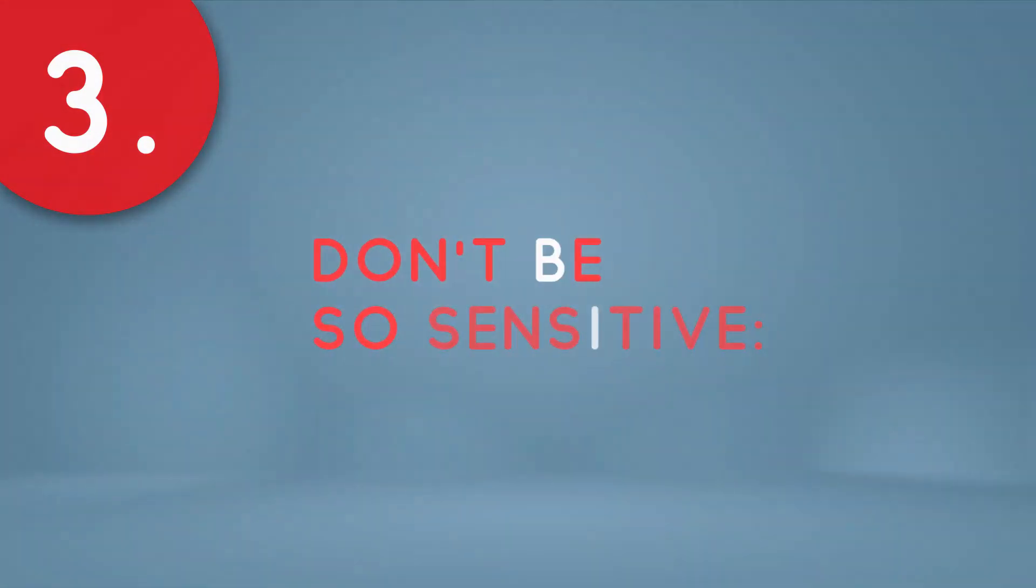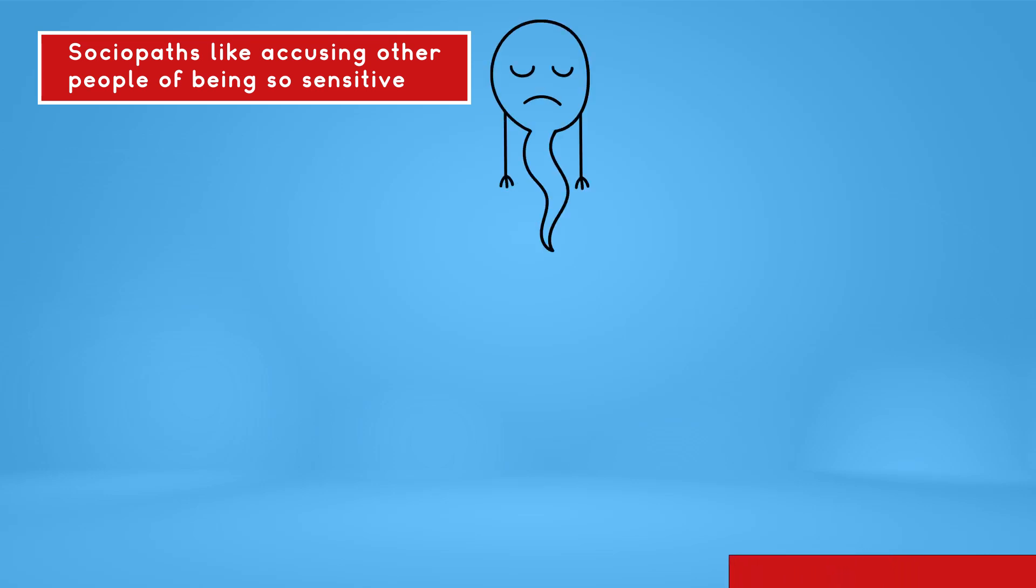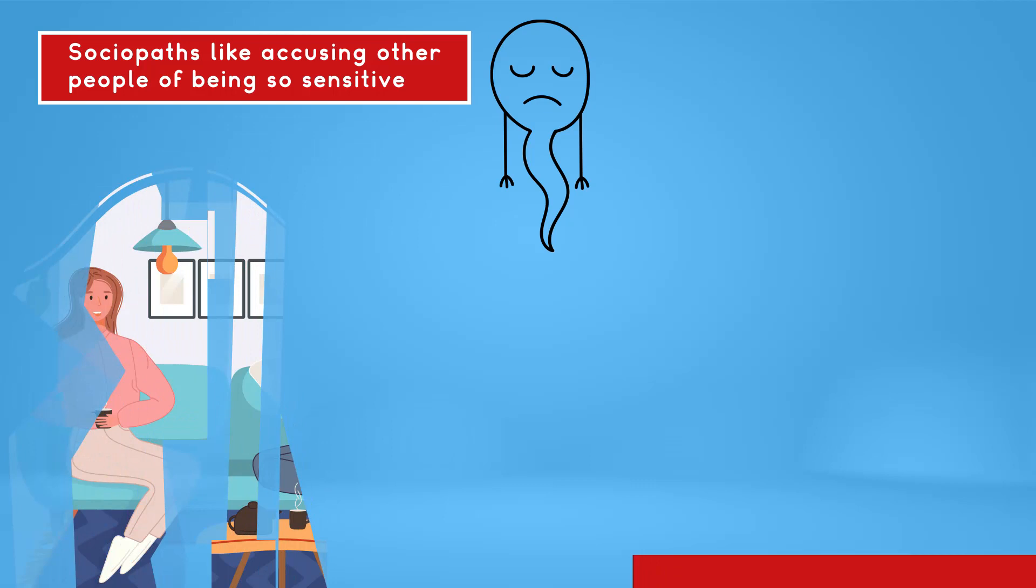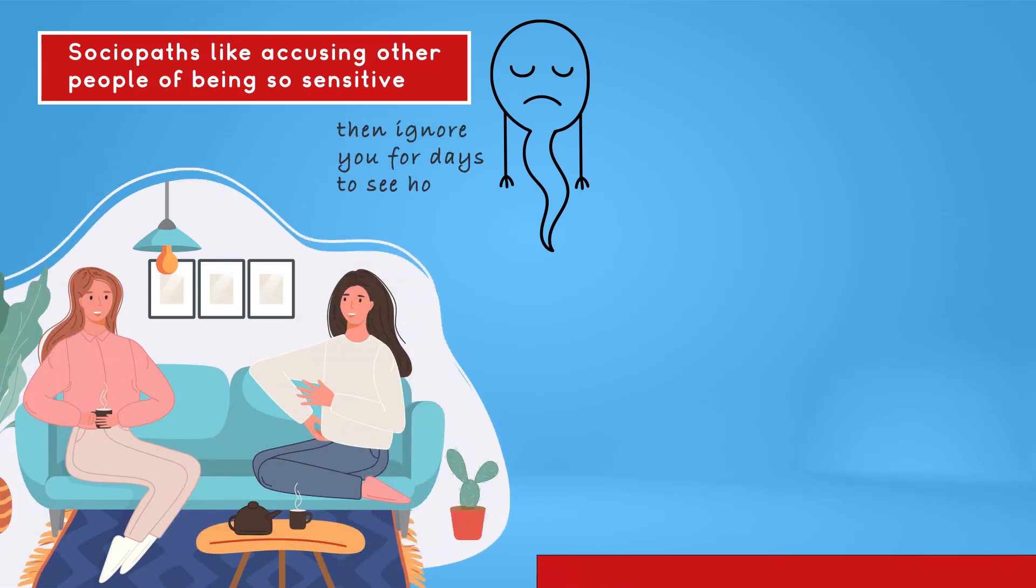Number 3: Don't be so sensitive. Sociopaths like accusing other people of being too sensitive, thereby manufacturing emotions in others. They start by using flattery and praise on you, then ignore you for days to see how you react. And then, when you finally do and ask them why they ignore you, they'll accuse you of being too sensitive.